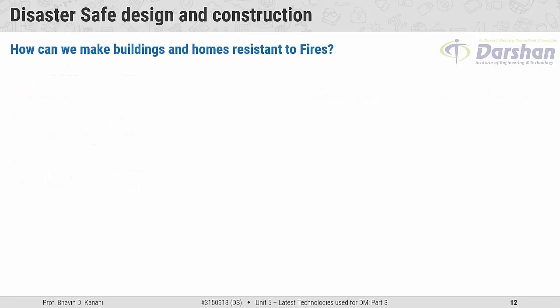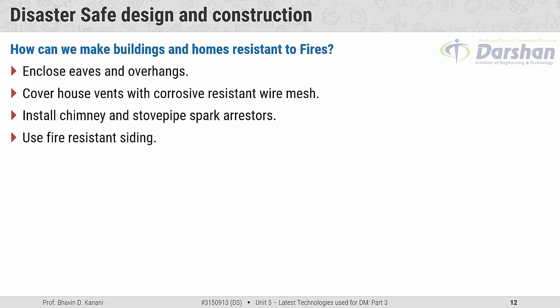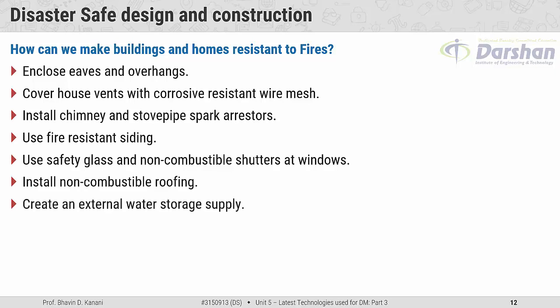How can we make buildings and homes resistant to fires? Enclose eaves and overhangs. Cover house vents with corrosion-resistant wire mesh. Install chimney and stove pipe spark arrestors. Use fire-resistant siding, safety glass, and non-combustible shutters at windows. Install non-combustible roofing. Create an external water storage supply.